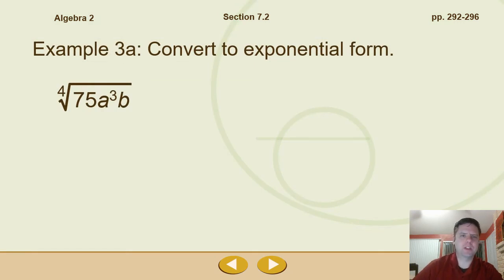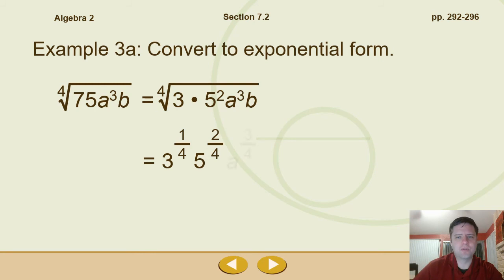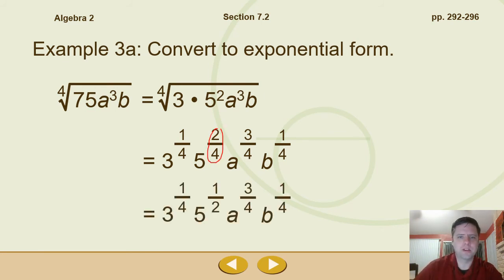All right, so if we're going to convert this to exponential form, what would we do? Well, we can first find what we've got within 75. So we've got 3 times 5 squared, a cubed times b. This is like saying 3 to the 1/4 times 5 to the 2 over 4 times a to the 3 over 4 times b to the 1 over 4. So notice that these are all fractions. We can reduce this one to 1/2, this one right here to 1/2. But otherwise, everything else is already reduced as far as it can go. And so it just would be left like this. This is exponential form.